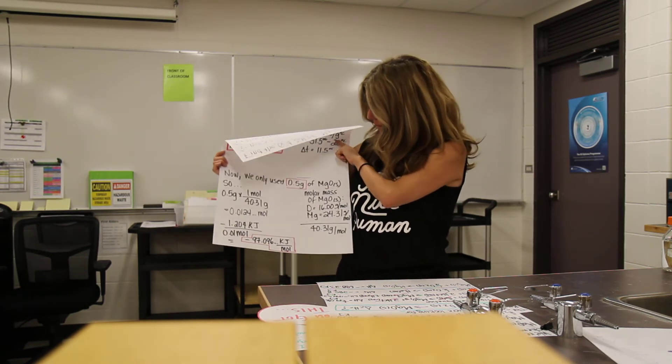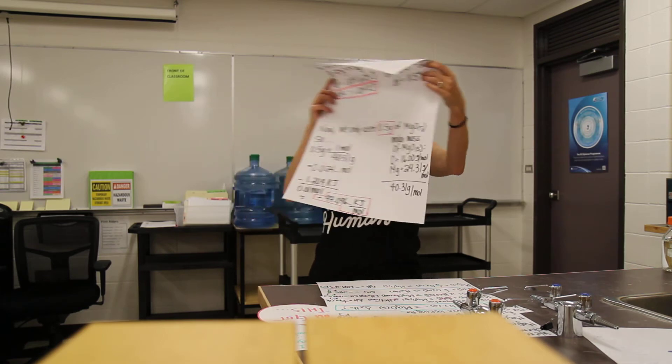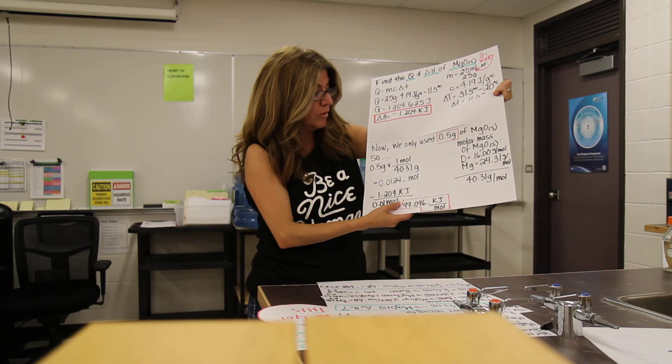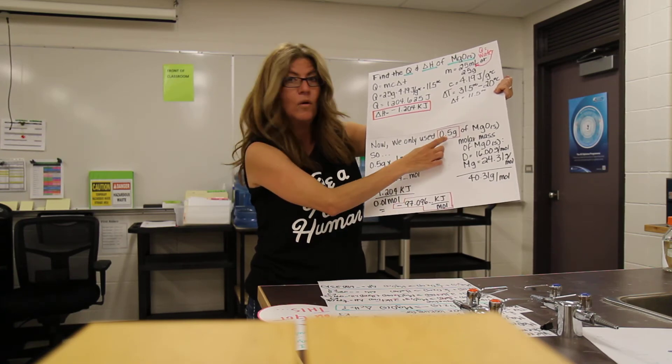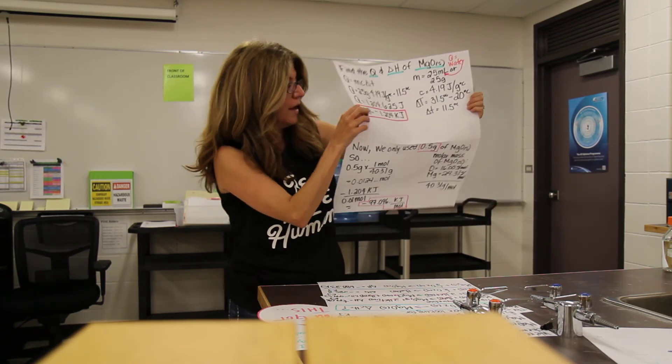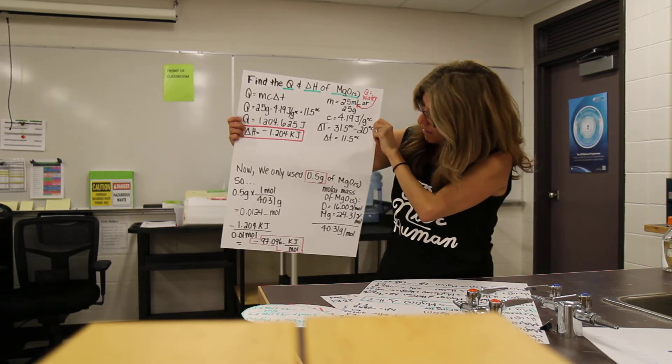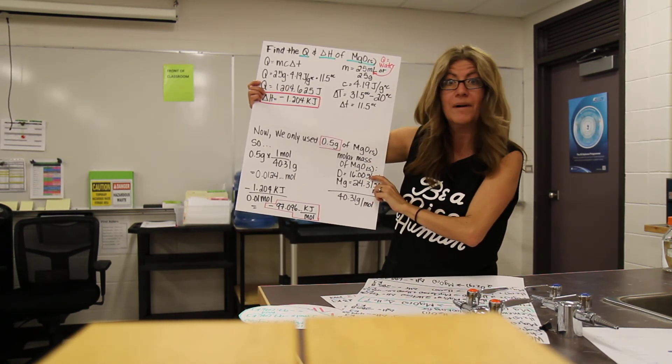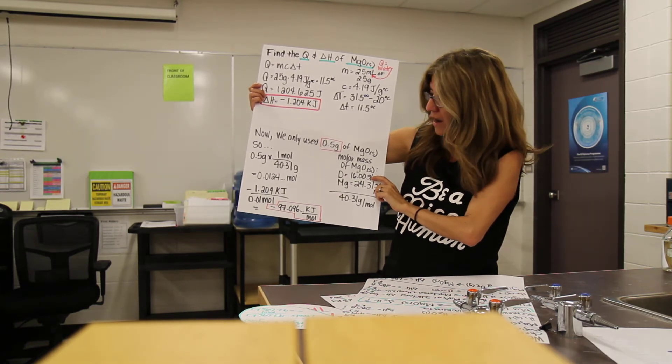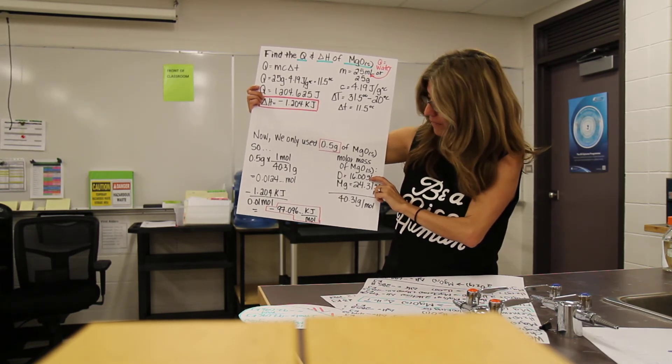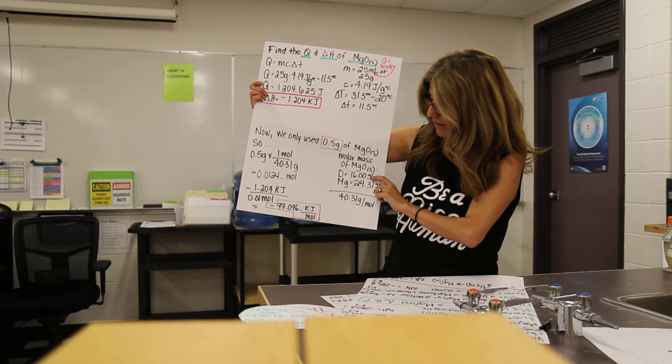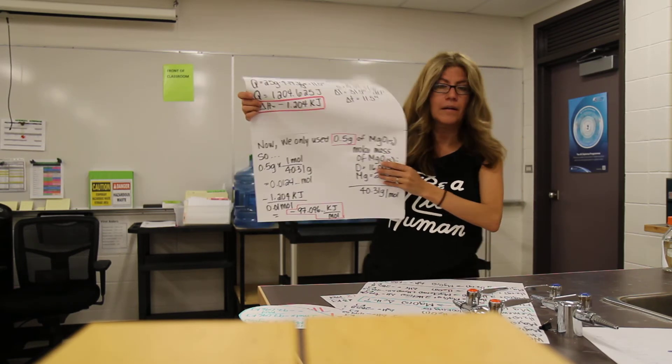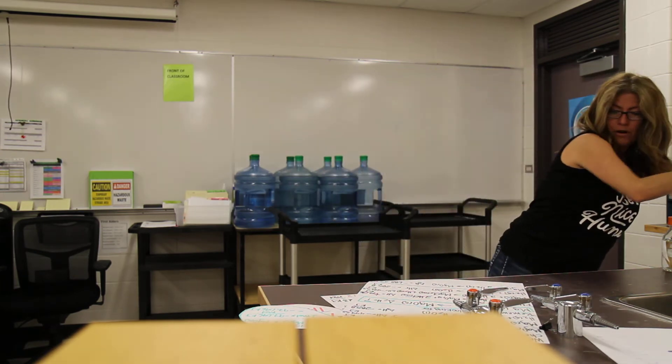Now, we only use 0.5 grams of magnesium oxide, so we have to keep that in mind, and we have to change that to moles. Find the molar mass, 40.31 grams per mole of the magnesium oxide. And now what we have to do is take our negative 1.204 kilojoules, divide that by 0.0124 moles, and we get negative 97.096 kilojoules per mole. Remember, the Q is positive. The delta H is going to be negative. We've got the same problem with this one. All righty, moving on.